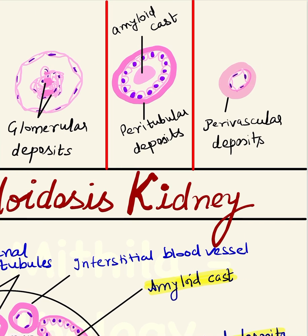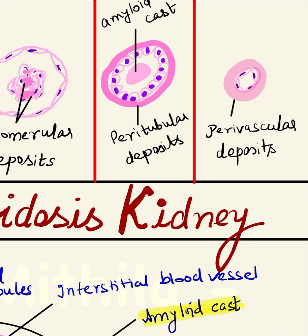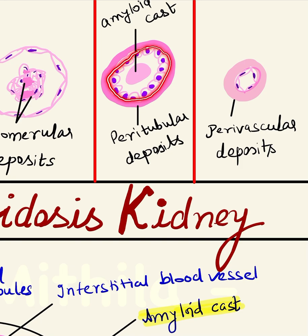Secondly, in the tubules — proximal and distal tubules of the nephron. To draw a tubule, you make the basement membrane, then line it with cuboidal epithelium; cuboidal cells have equal length and width and a rounded nucleus in the center stained purple by hematoxylin. In amyloidosis kidney, amyloid protein deposits in the peritubular area around the basement membrane, and later on it can also get deposited in the interstitium between two tubules.